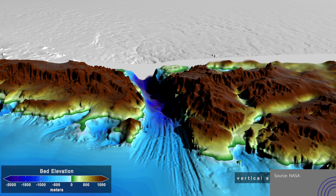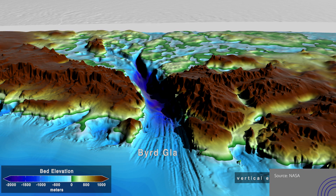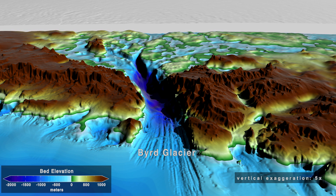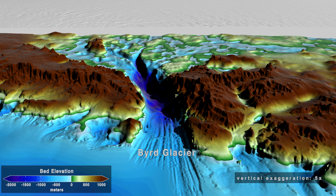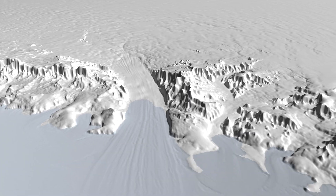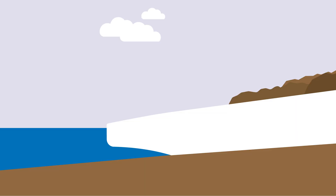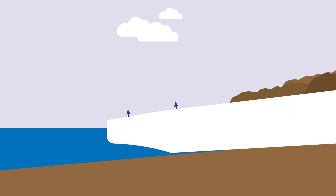It also matters whether the ground beneath the glacier is bare bedrock or loose sediment, whether the land surface is flat or made of hills and valleys, and how steep the slope is. And where glaciers reach the ocean, flotation eventually lifts ice off the ground, reducing some of the friction on the inland side. All these variables affect how fast glacial ice moves.